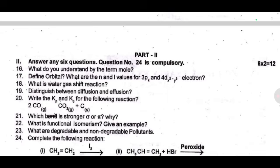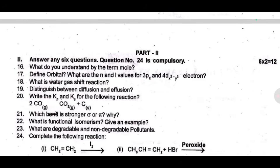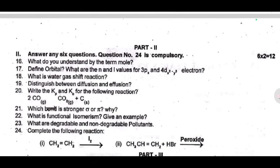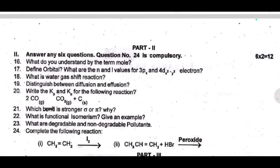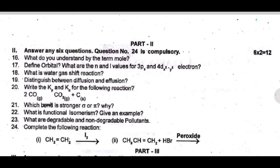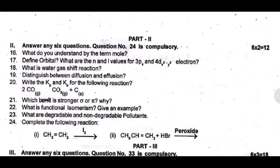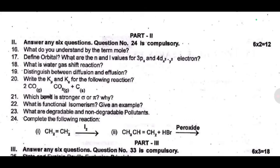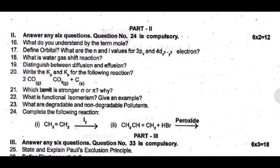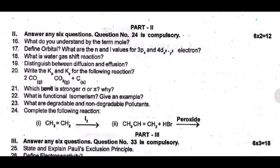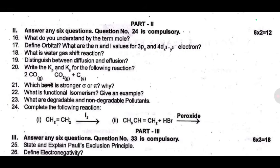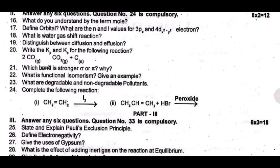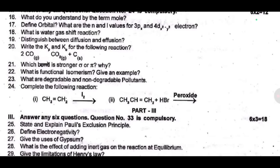Nineteenth one — distinguish between diffusion and effusion. Twenty — write the Kp and Kc for the following reaction: 2CO → CO₂ + C. Twenty one — which bond is stronger, sigma or pi? Why? Most repeated question. Twenty two — what is functional isomerism? Give an example. Twenty three — what are degradable and non-degradable pollutants? Twenty four — complete the following reactions: CH₂=CH₂ gives dash; next substitution CH₃CH=CH₂ + HBr with peroxide gives dash.